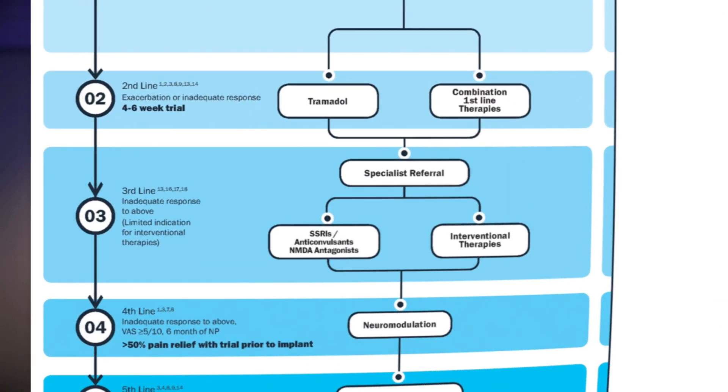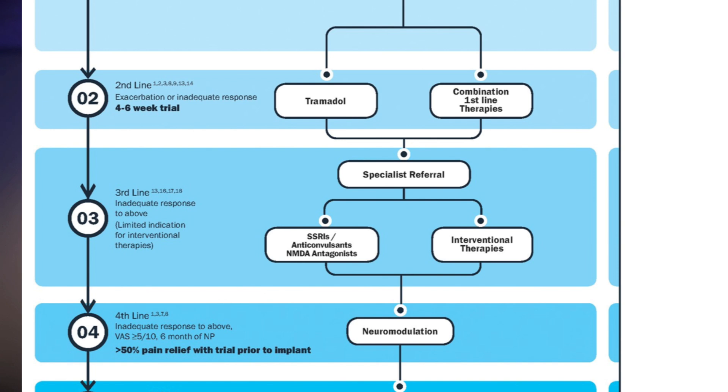This algorithm then recommends getting to a specialist center — a pain specialist center or pain specialist network. We are a pain specialist center and network, and we sometimes see people very early in their neuropathic pain journey, not just after they've tried a couple of treatments. So step three: if you're not winning on single medications or combination medications with tramadol, get to a specialist center.